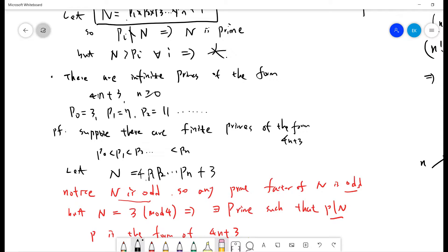So you see, N is 4... if N divided by 4, remainder is 3. So that means there is a prime factor such that p divides N, and p is of the form 4n plus 3.